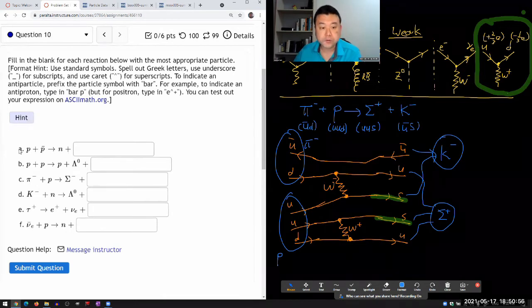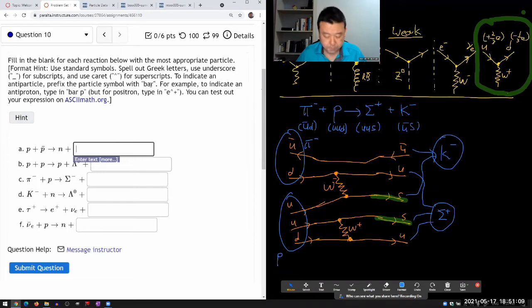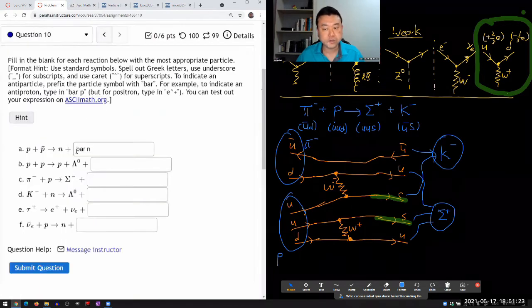For A, if I don't want any strangeness violating interaction, then I need antineutron here. To indicate that, I prefix the particle symbol with bar, so it should be bar n. Let me just make sure that it works. So it should be antineutron in order to be counterpart to that, that can happen by electromagnetic or strong interaction.